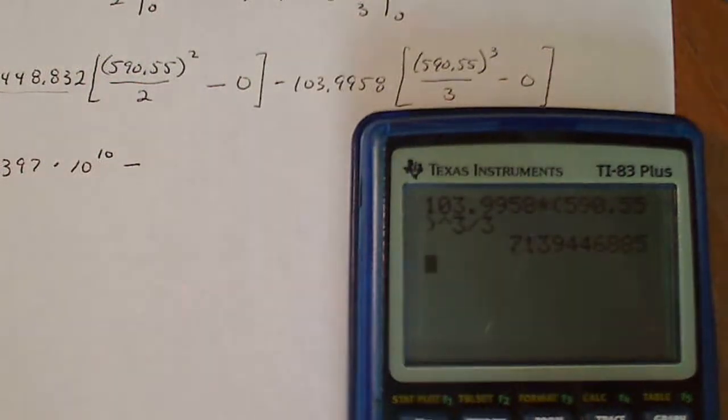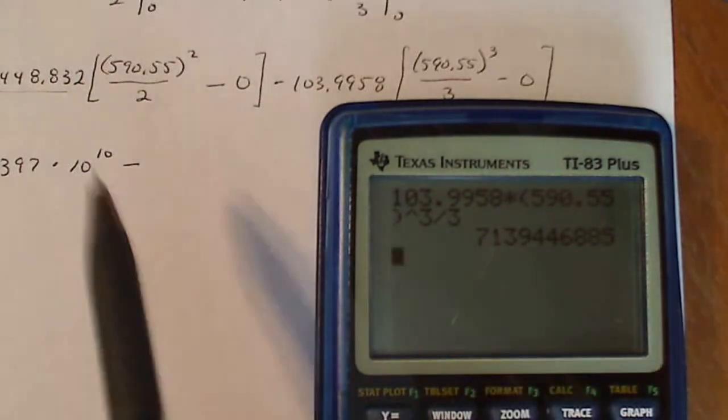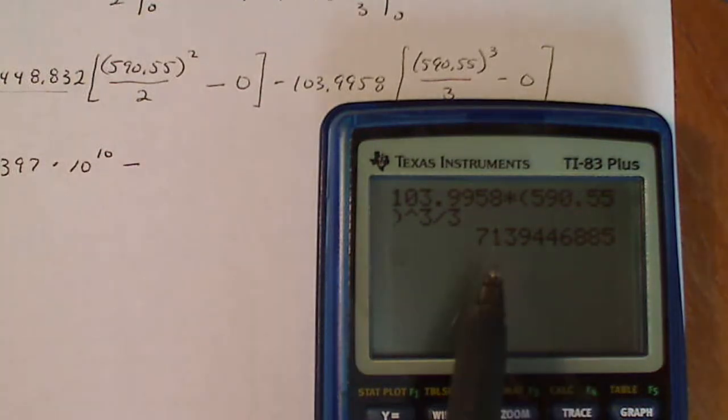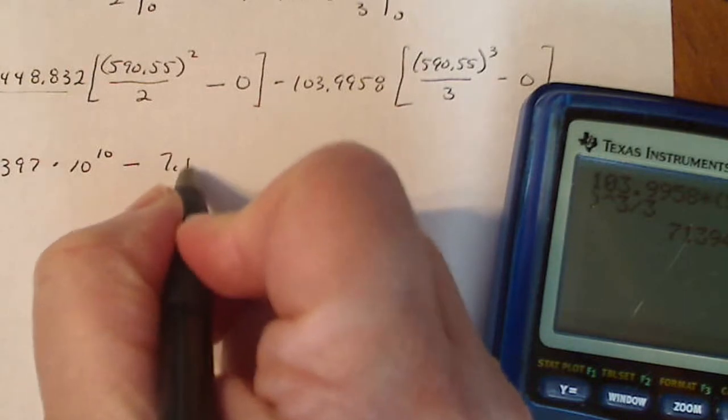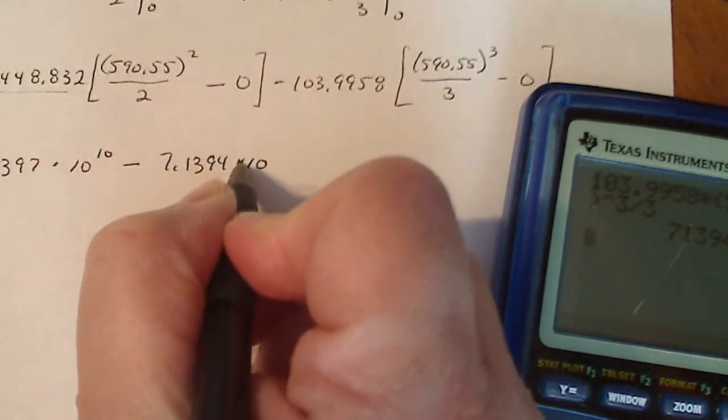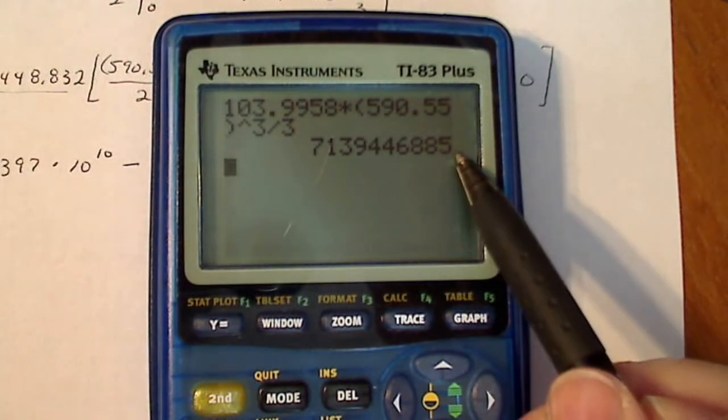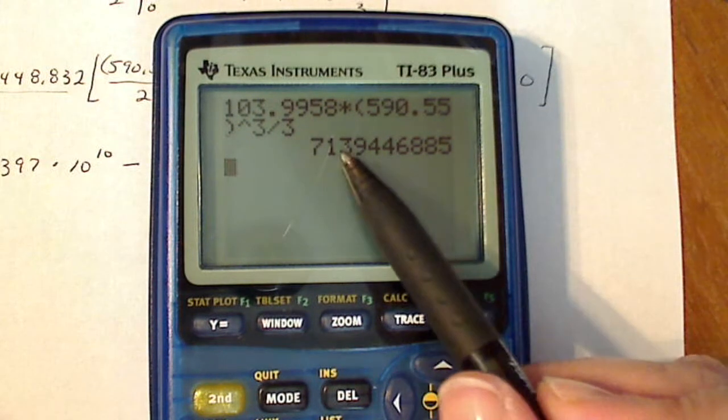I'm going to write it down. I think I'm going to use scientific notation. 7.1394. 7.1394 times 10 to the, let's see, 1, 2, 3, 4, 5, 6, 7, 8, 9.